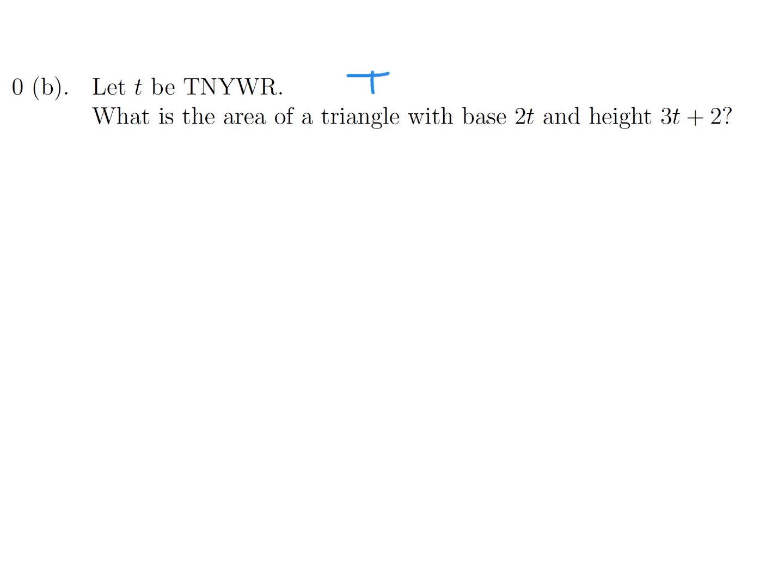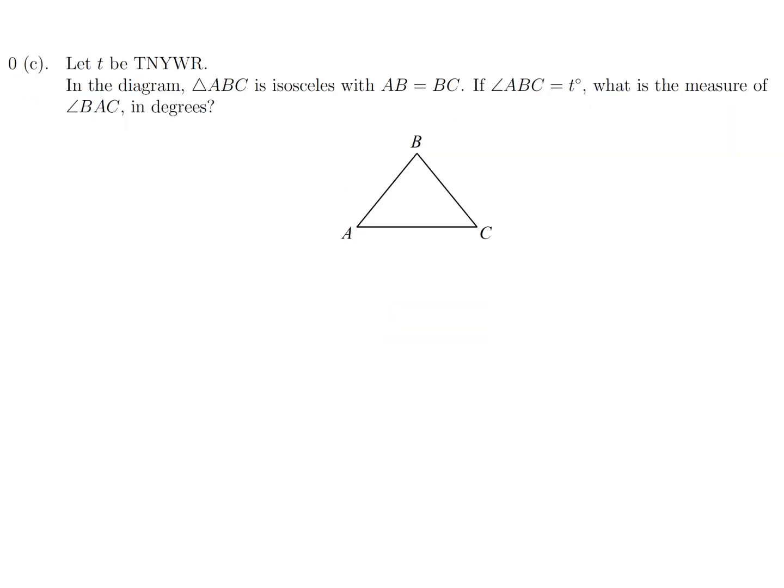So t is the answer to the previous question, and here we go. What is the area of the triangle with base 2t and height 3t plus 2? So the area is one half base times height, so the base is 2t and the height is 3t plus 2. So we've got 12 and 20, I believe. You sub in t equals 6, and that is 120.